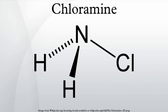Chloramines are derivatives of ammonia by substitution of 1, 2, or 3 hydrogen atoms with chlorine atoms: monochloramine, dichloramine, and nitrogen trichloride. The term chloramine also refers to a family of organic compounds with the formulas R2NCl and RNCl2.